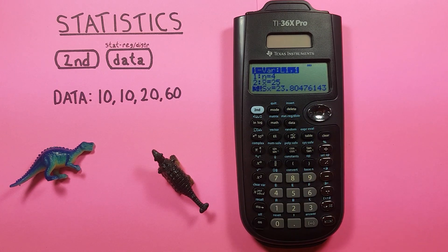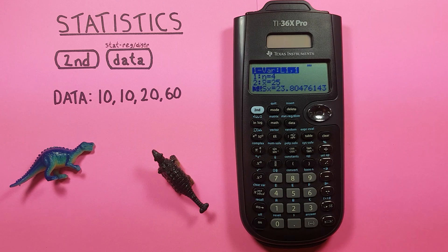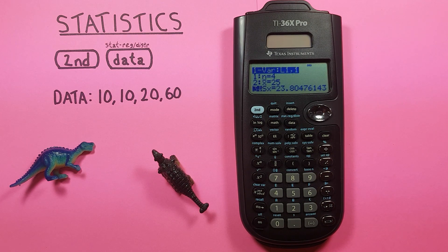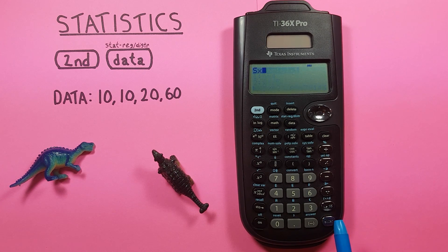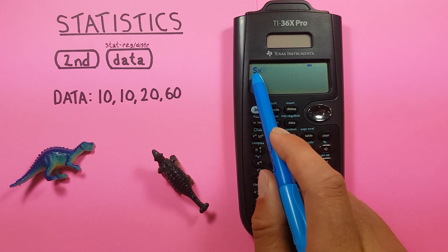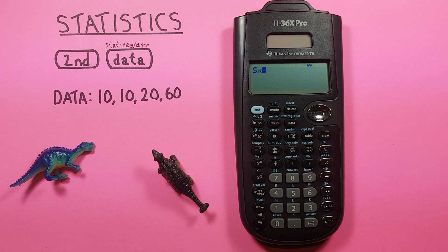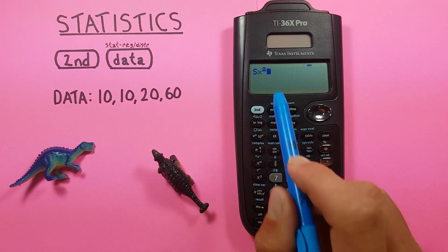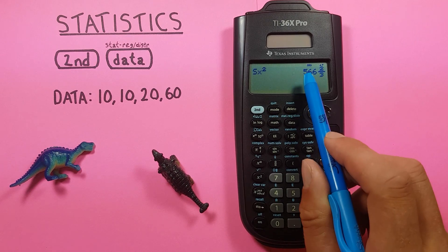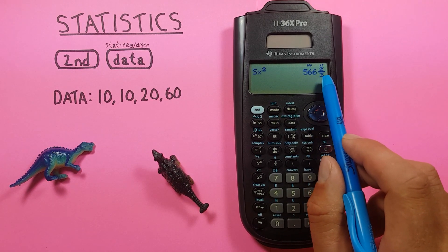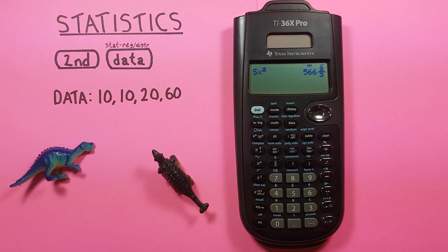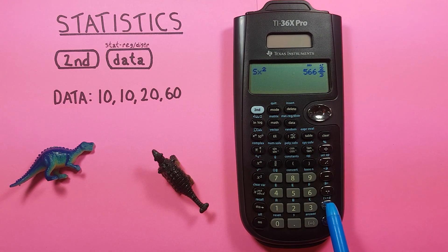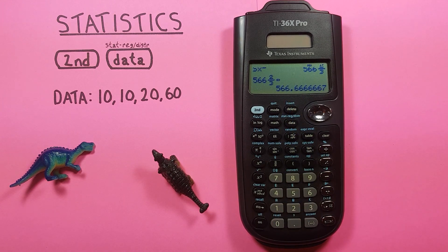Down again we get a sample standard deviation of 23.80476 etc. Now if we want to find the variance for this standard deviation we can press enter to place that on our screen. That represents our sample standard deviation and remember squaring our sample standard deviation gives us the variance. So we just press the X squared key and enter and we get a variance of 566 and two-thirds, which again we can convert to decimals with this left and right arrow key here and get a sample variance of 566.6666 etc.